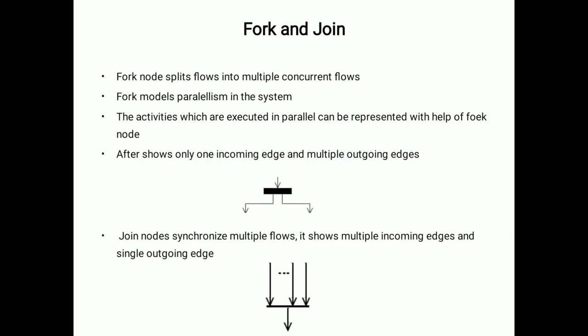Next is fork and join. Fork node splits flows into multiple concurrent flows. Fork node models parallelism in the system. The activities which are executed in parallel can be represented with the help of fork node. Fork shows only one incoming edge and multiple outgoing edges. Here that example is shown.